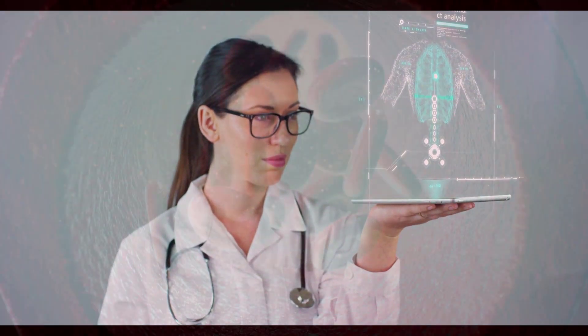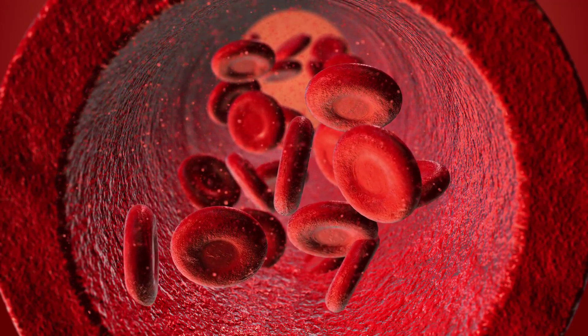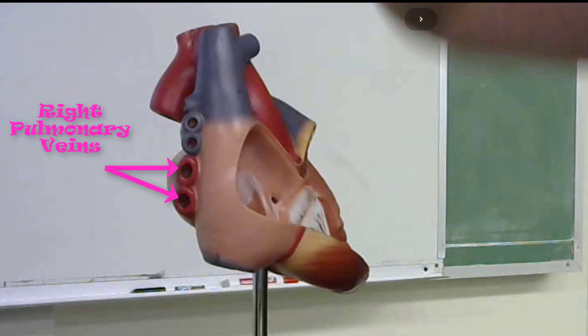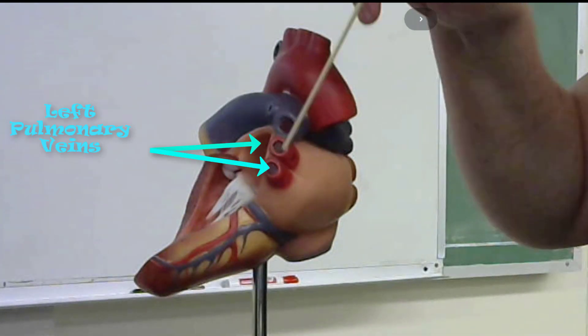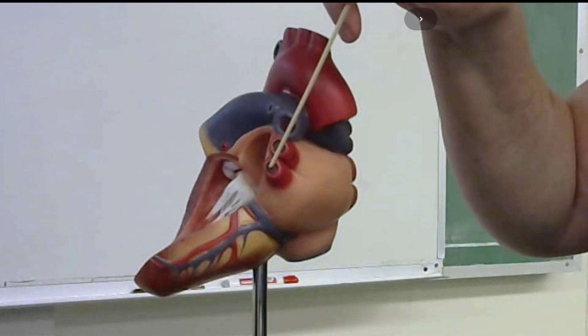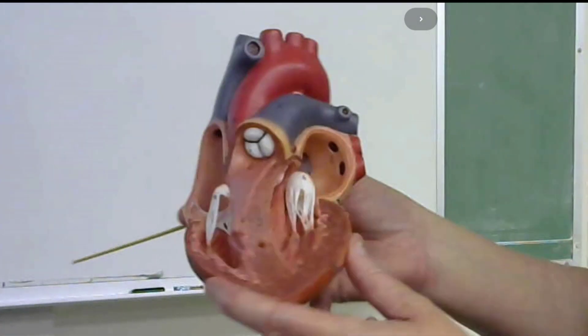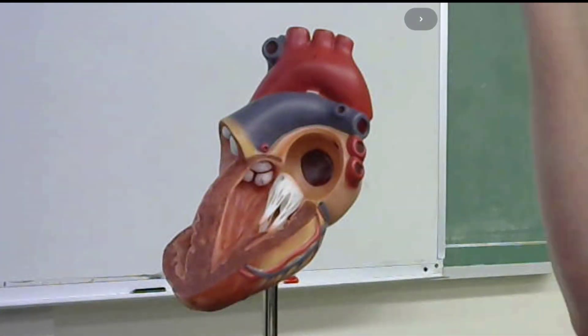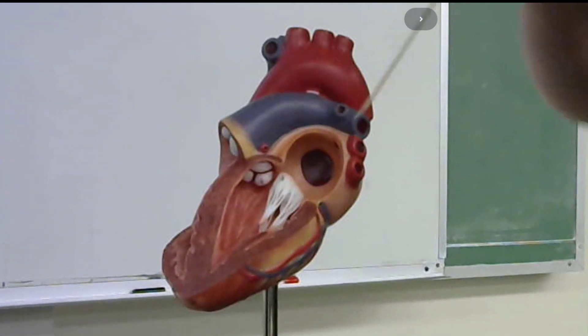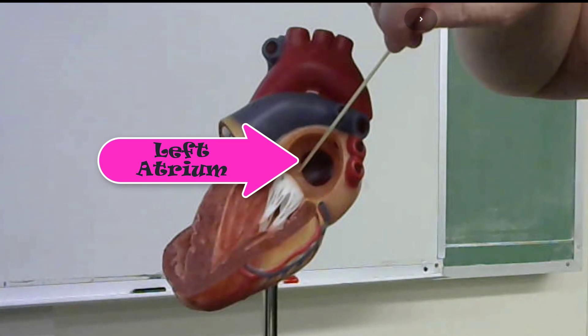At this point, the deoxygenated blood travels to the lungs, releases carbon dioxide, and picks up oxygen, becoming oxygenated. It then returns to the heart through the right and left pulmonary veins. By definition, these vessels are headed toward the heart, so they are veins — but they are colored red because they carry oxygenated blood.